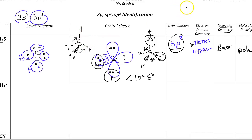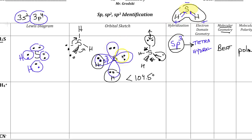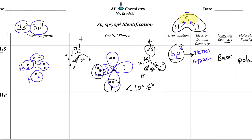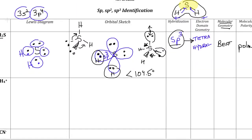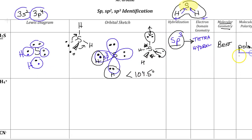H2S is a polar molecule. The two lone pairs bend the molecule downward, giving it an asymmetrical shape. Sulfur is more electronegative, pulling electrons closer — creating an electron-rich region near sulfur and an electron-poor region near the H's. This side is negative, the H ends are positive. If it were linear — like SP without the lone pairs — it would be non-polar. But the bent shape means it's a polar molecule. The two lone pairs bending the molecule down are two parts of the tetrahedral arrangement.